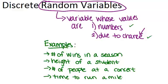Now that we have an idea of what a random variable is, we're going to start to think about the word discrete and how that affects a random variable. What does it mean for a random variable to be discrete? Well, it adds one more restriction. To be a discrete random variable, the values of the variable have to be within a certain range and there has to be only a finite number of possible values. So you should be able to list out all the possible values for that variable.